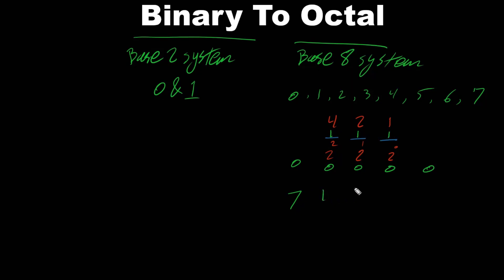If we had only 2 bits it wouldn't be enough for the octal number, and if we had more than 3 bits it would exceed 7, which we don't need. So every octal digit requires exactly 3 bits.